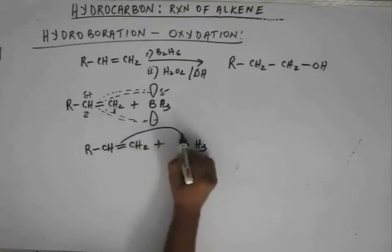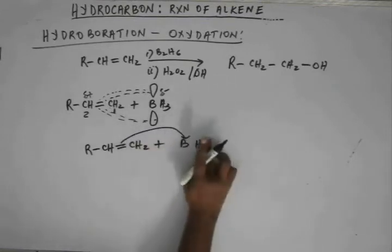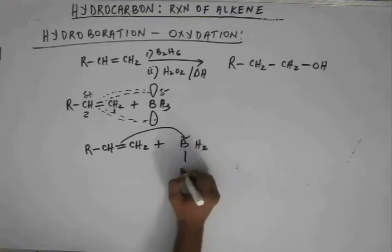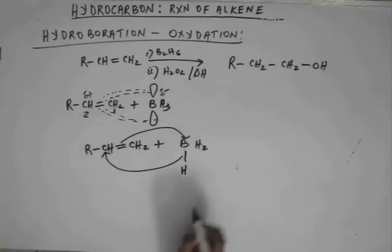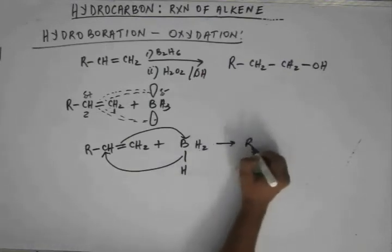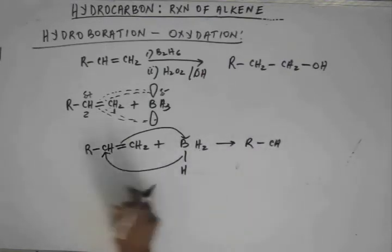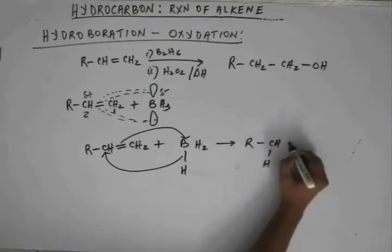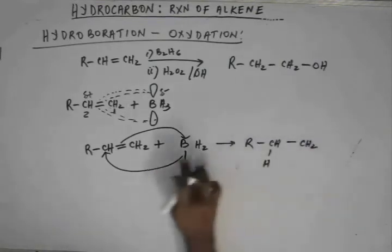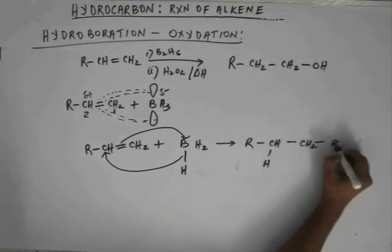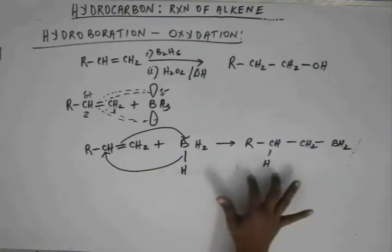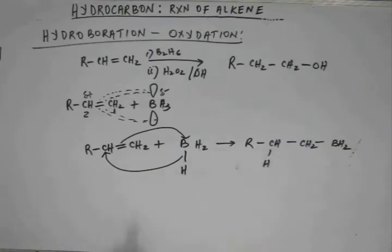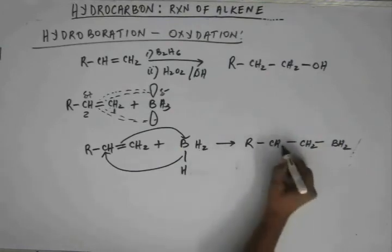To show this properly: the electrons from the pi bond go into the orbital of boron, and the hydrogen's electrons go into the orbital of C2. When this process completes, hydrogen comes onto C2 and C1 forms a bond with boron, giving us this intermediate. Boron is again forming three bonds.